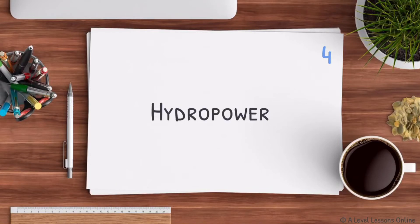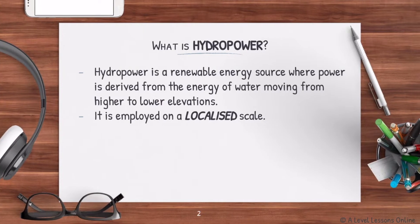Welcome back to another video on human geography. Today we're covering part four on hydropower. Hydropower is an extremely important alternative energy source you need to know for your geography exam, because this question alone can come out for 20 marks. It's a very important part of your syllabus, usually tested in Theme 3, section 3.1.